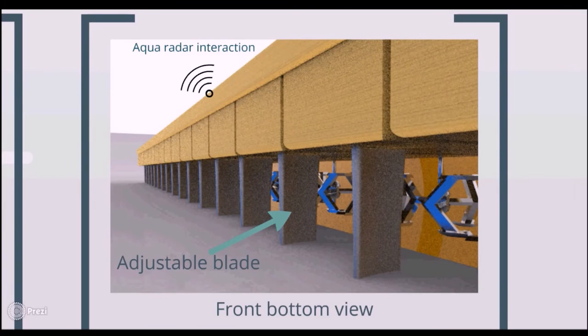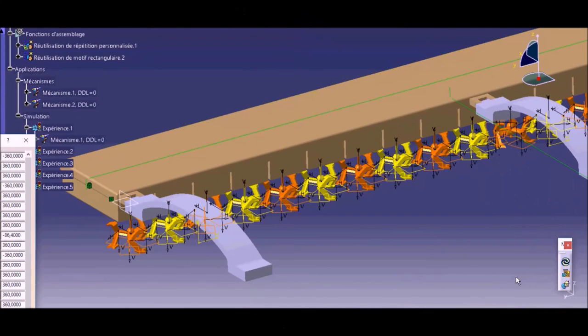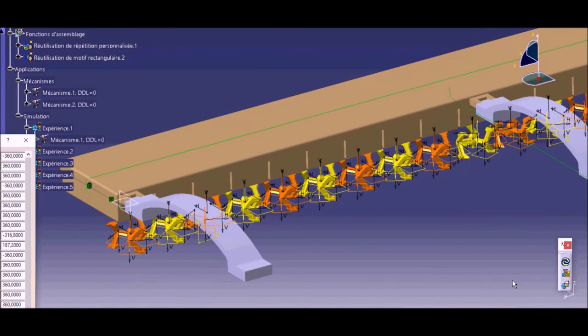A connected system of hydrometric sensors permits to communicate data about the level and flow rate via phone application Aqua Radar developed by Aqua Hacking. Moreover, the blades are connected and able to turn when a boat is coming.